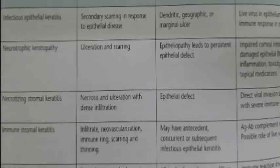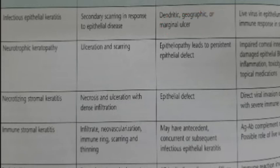In infectious epithelial keratitis, as you know, there is a dendritic, geographic, or marginal ulcer. Coming to the stromal involvement in infectious epithelial keratitis, it is because of secondary scarring in response to the epithelial disease, and this is because of the live virus in the epithelium.